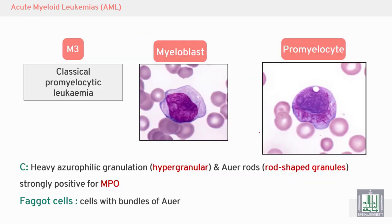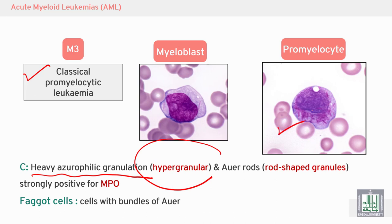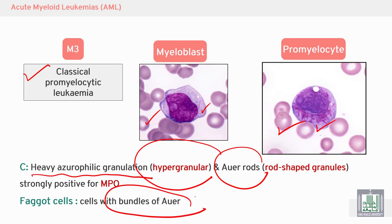M3 is classical promyelocytic leukemia characterized by heavy granulation — hypergranular. You can see here the cytoplasm is hypergranular with many Auer rods. When there are many Auer rods, there is a collection or bundle of Auer rods — what is called a Faggot cell.